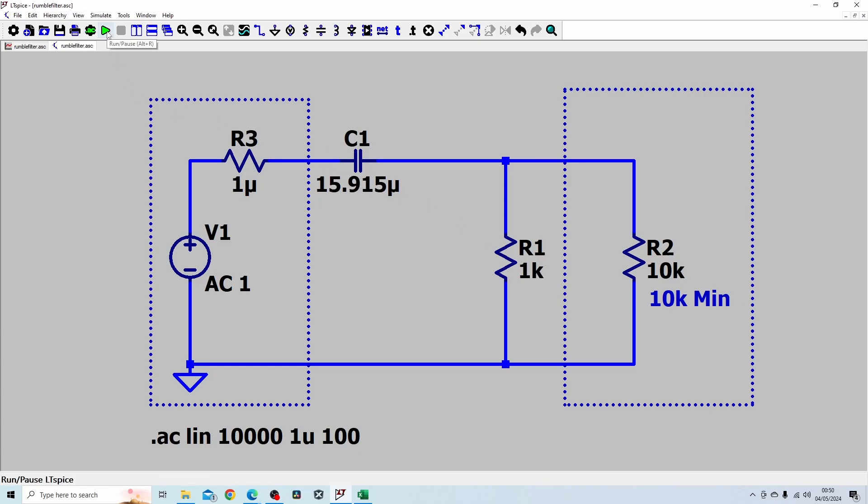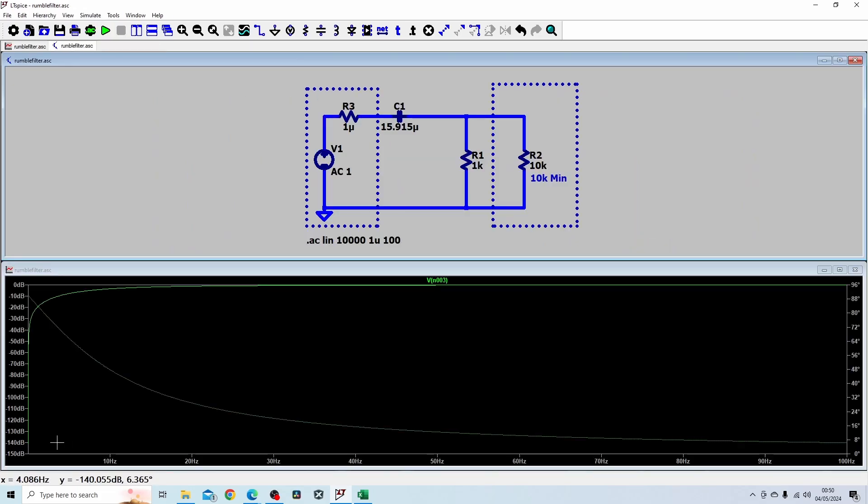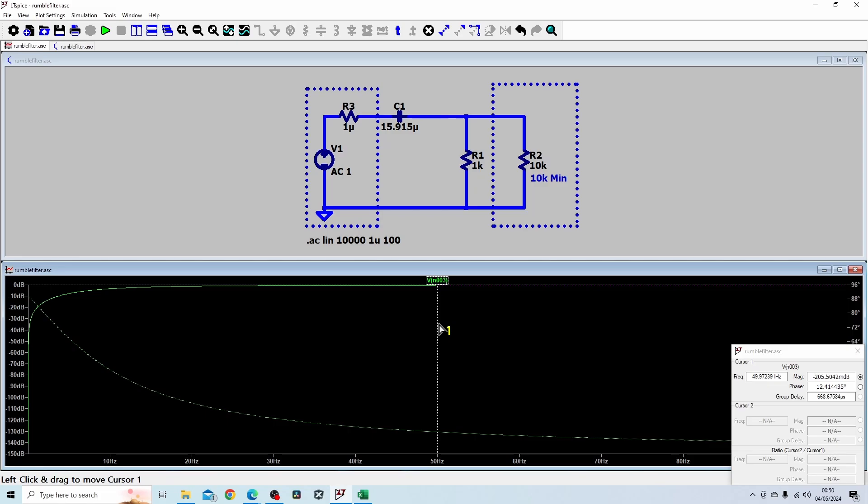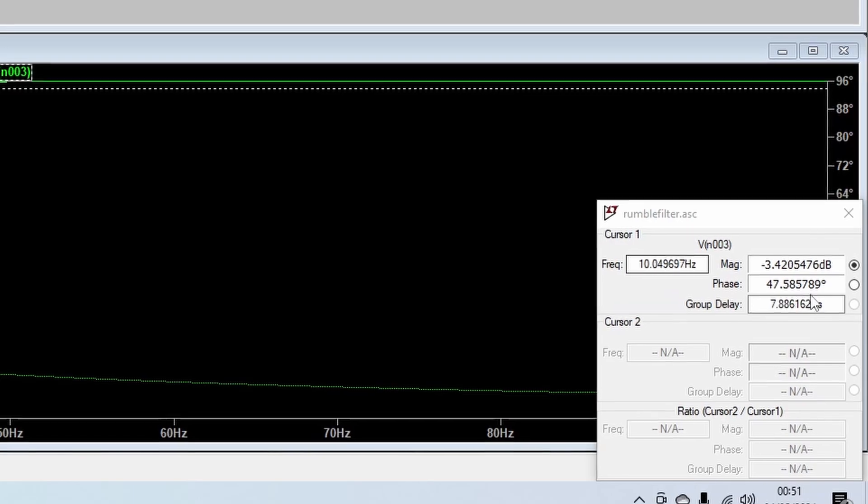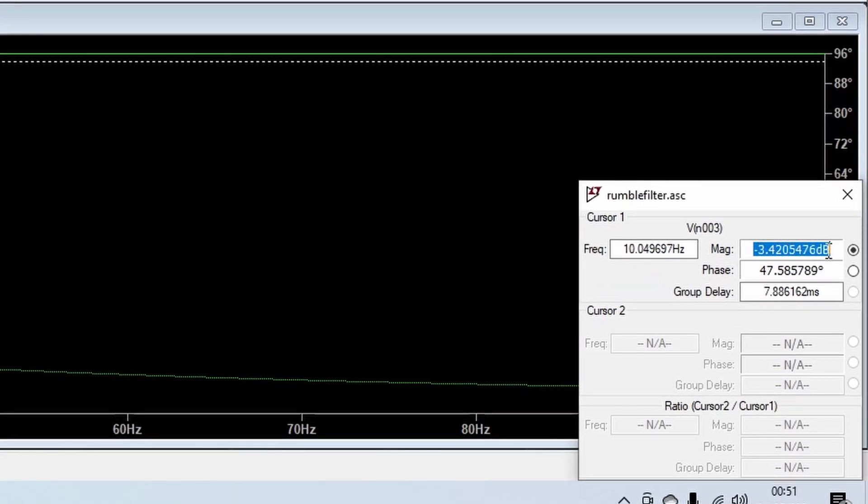Let's run the simulation and see what the cutoff frequency is. You can see it's a high pass filter in that you have very high attenuation at 0 hertz going down to like 140 dBs. Let's look at the 3 dB point. You can see at approximately 10 hertz we have an attenuation of minus 3.42 dBs so quite close to what we're looking for.